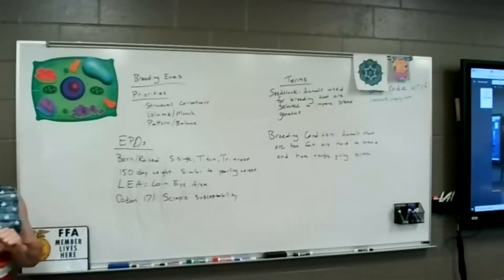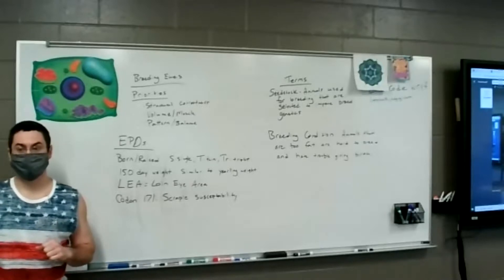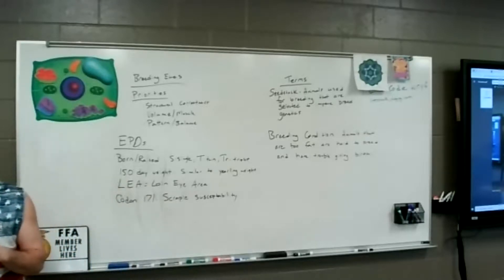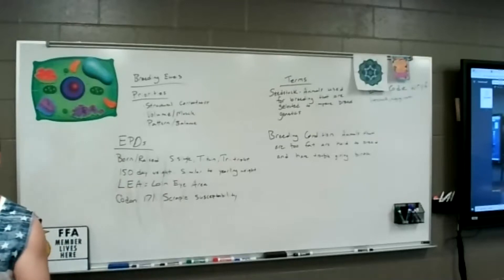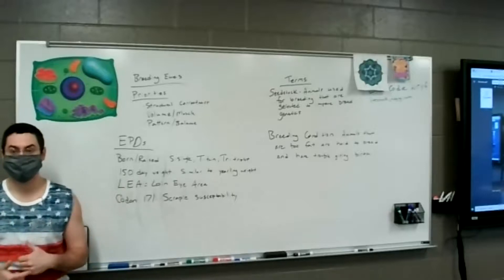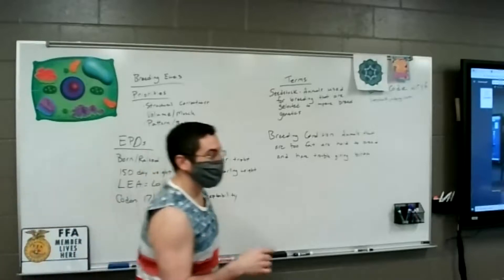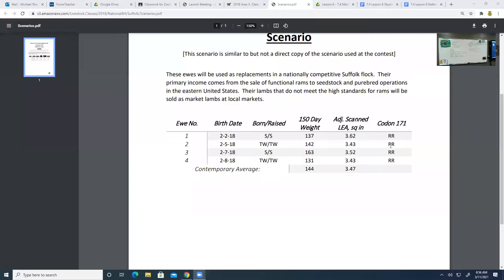Codon 171. Has anybody ever heard of that before? Has anybody heard of scrapie before? Has anybody heard of mad cow disease before? Okay, so scrapie is the sheep version of mad cow. It's a neurological disorder that is 100% fatal. You do not want your lambs to get scrapie, okay? Codon 171 is a protein that indicates whether that sheep is susceptible to scrapie or not. So what we want is for them to have a recessive, and in fact a double recessive gene for codon 171. So in this case, if you look at our example here, all three of these ewes are R, which means that they are recessive, which is a good thing.